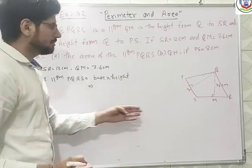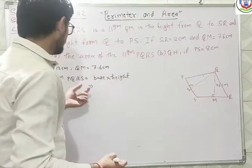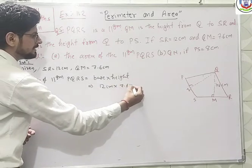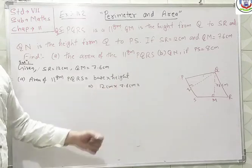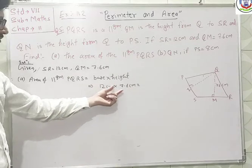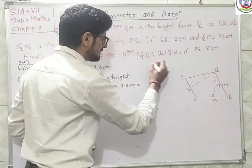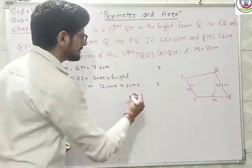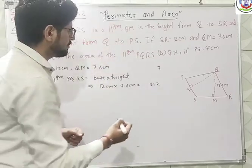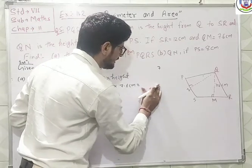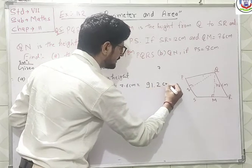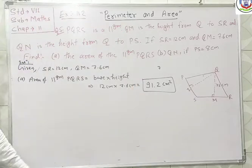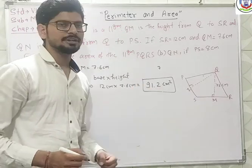So our base is SR, which is 12 cm, and we multiply by 7.6 cm. So 12 multiplied by 7.6: 12 times 6 is 72, then 12 times 7 is 84, and 84 plus 7 is 91, giving us 91.2 cm². So the area of parallelogram PQRS is 91.2 cm².